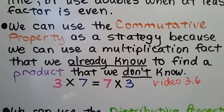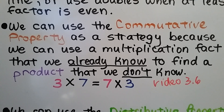We can use the commutative property as a strategy because we can use a multiplication fact that we already know to find a product that we don't know. If we know 3 times 7, it's equal to 7 times 3, because the commutative property says we can multiply in any order. We can just put it in a different order and find the product. We did that in video 3.6 and there will be a link in the description.